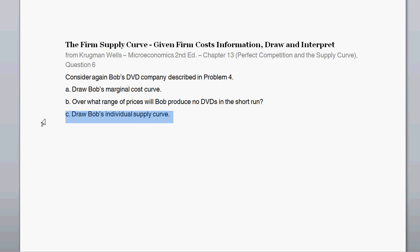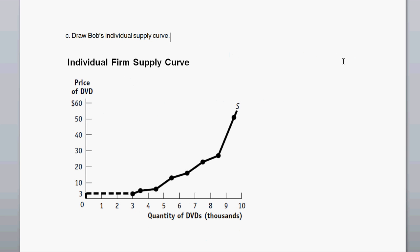So now we're asked to draw Bob's individual supply curve. Well, the supply curve is a mapping or schedule of quantity produced given a market price. A supply curve for an industry is, given these prices, how much are firms willing to produce at that price? So it's a mapping of quantity to price or a schedule of quantity to price. A supply curve can be for a single firm, it doesn't have to just be for the industry. This, the marginal cost curve, tells us the quantity that the firm will produce given different prices.